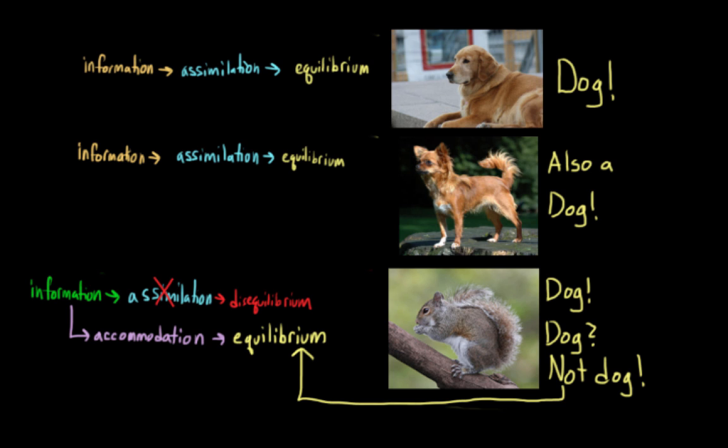So the idea here is that development moves along in a state of equilibrium as we assimilate new information that we come across. But every once in a while we run into something that throws part of our world view into disarray. And this disequilibrium is what drives our learning process because we accommodate as a way to restore equilibrium.